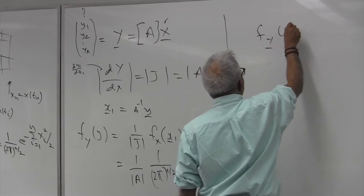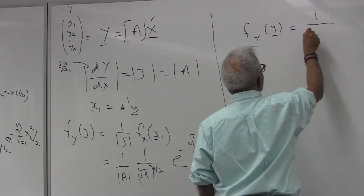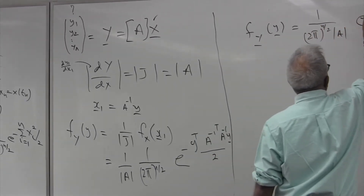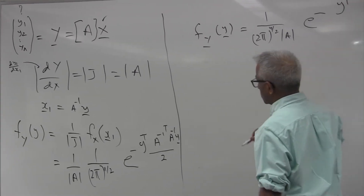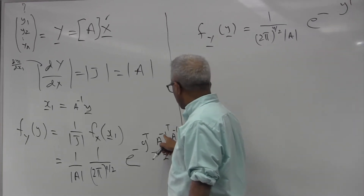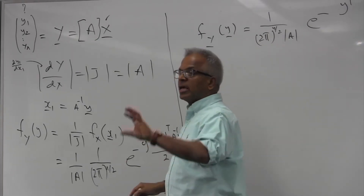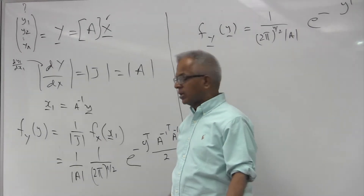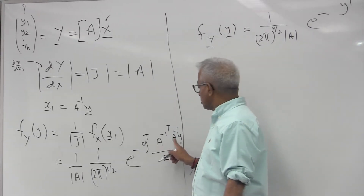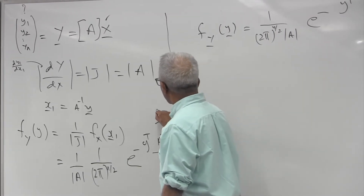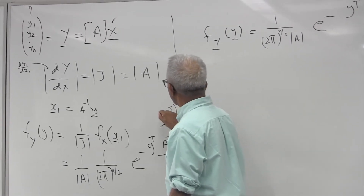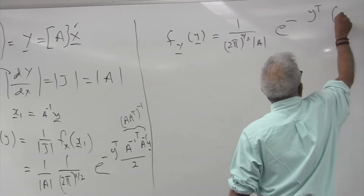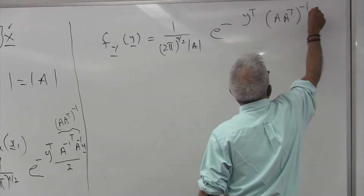Putting it together, the density function f(y) is (1/det(A)) × (1/(2π)^{n/2}) × exp(−y^T (A^{-T} A^{-1}) y / 2). Now, what is (A B)^{-1}? It is B^{-1} A^{-1}. So A^{-T} A^{-1} can be written as (A A^T)^{-1}.